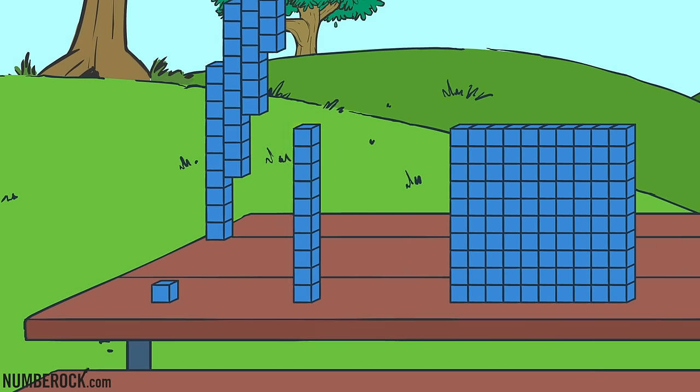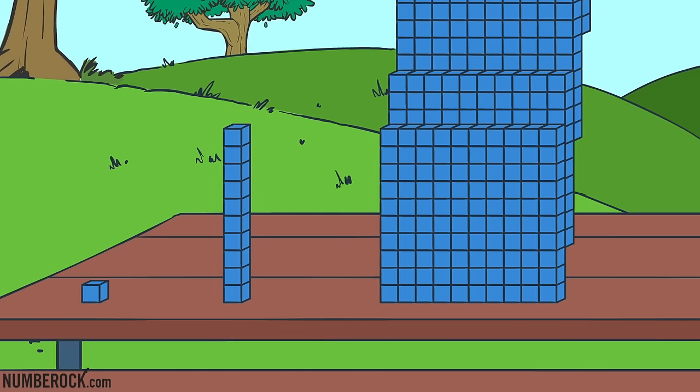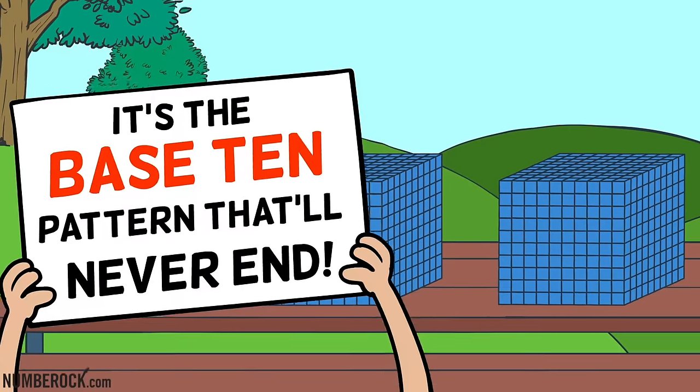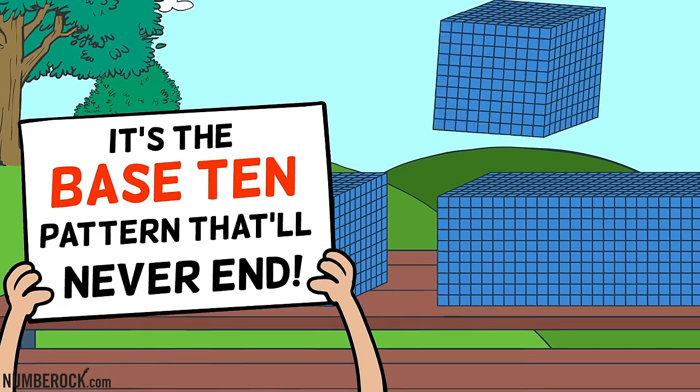Ten ones make a 10, 10 tens make 100, and then 10 hundreds make 1,000. It's the base 10 pattern that'll never end.